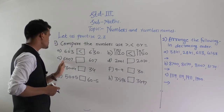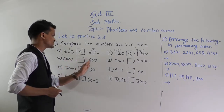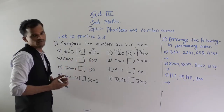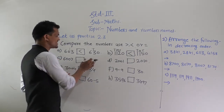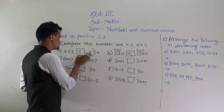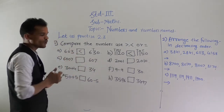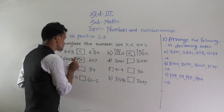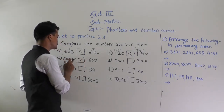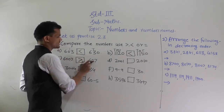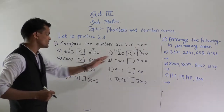Next, compare 6700 and 607. We know a 3-digit number is always smaller than a 4-digit number. So 6700 is greater than 607.